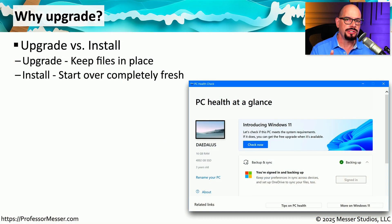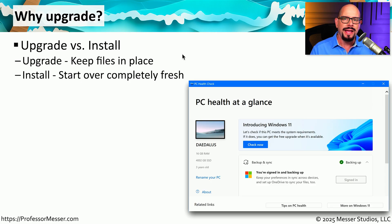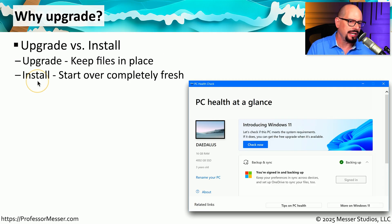When you're installing an operating system, you often have a choice. You can upgrade or you can install. Upgrade means that you already have an operating system in place and you'd like to keep all of your applications and all of your files exactly where they are and simply update the operating system around them. Installing means you're effectively starting over completely fresh, so any data on that drive will be deleted.